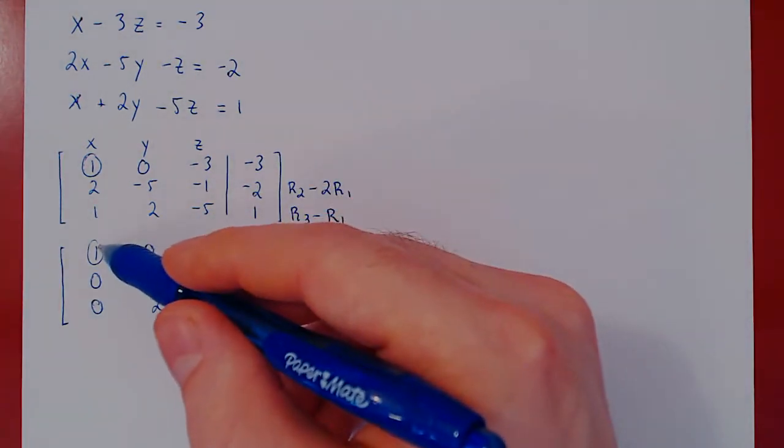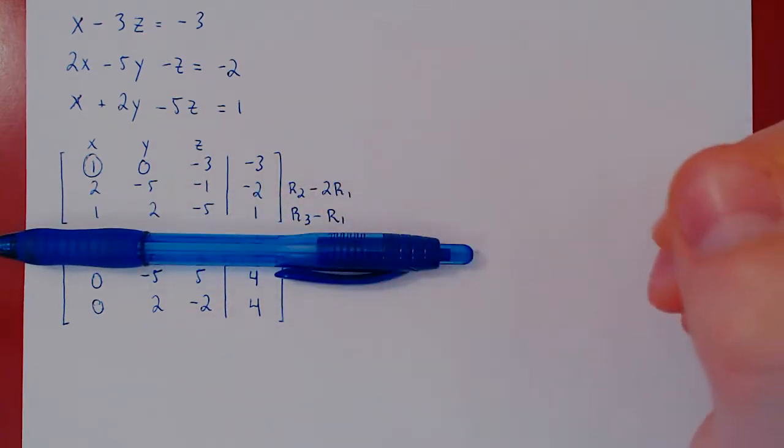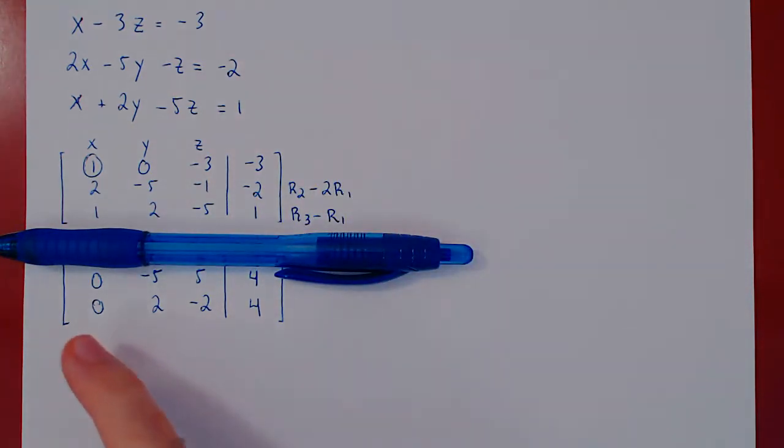Well, we have our leading one in the top row. We've killed all the entries below. So we ignore the first row, the top row, and we repeat. From the leftmost column, we try and get our second leading one in the top row. Well, we can't make a 1 from 0. So we move to the next column. There are two non-zero entries here.